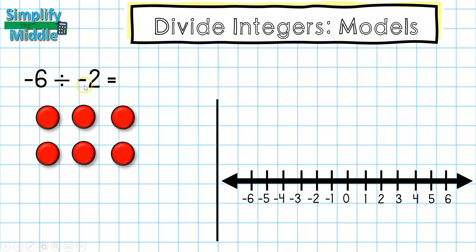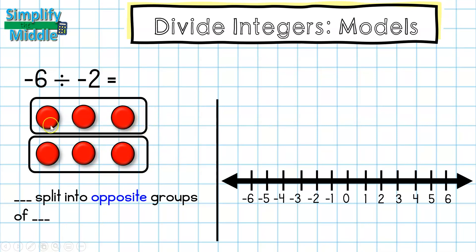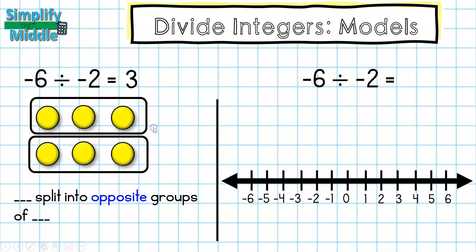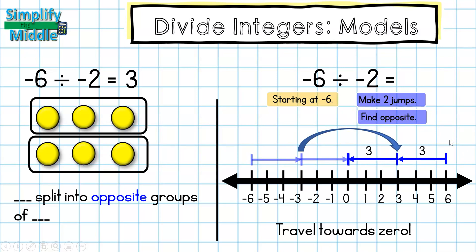Our last example is negative six divided by negative two. I start with six red chips — negative six split into opposite groups of two. First make two groups, then find the opposite by flipping them over. They turn positive, so the first group gives positive three. On the number line, start at negative six, make two jumps towards zero, then find the opposite by flipping to the other side. The answer is positive three.